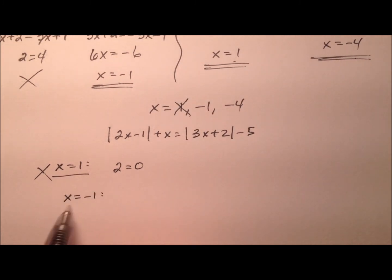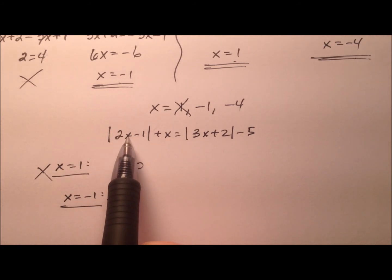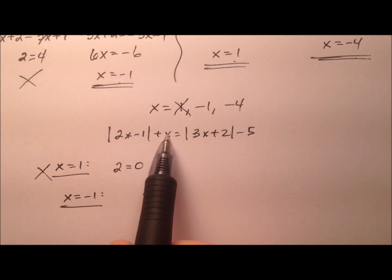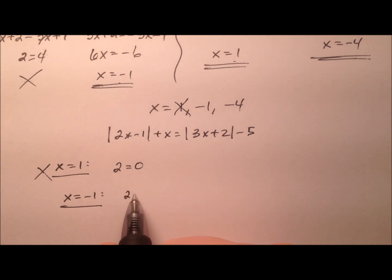So let's try x equals negative 1. Okay, so 2 times negative 1 is negative 2. Minus 1 is negative 3. Absolute value is positive 3. And then plus x which you're adding a negative 1. So that'll be 2.